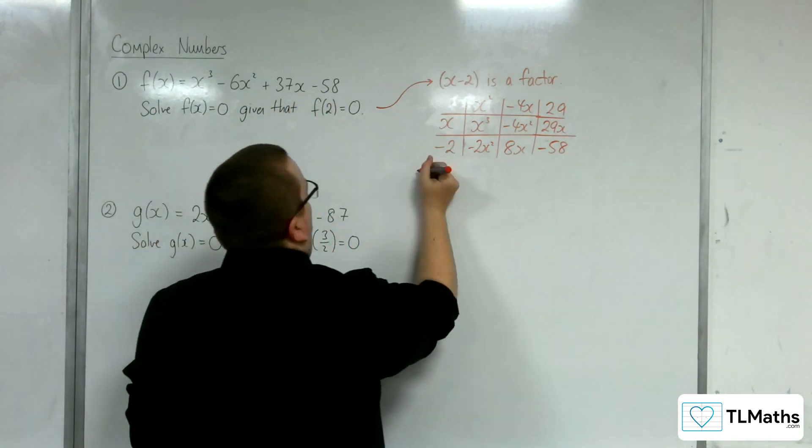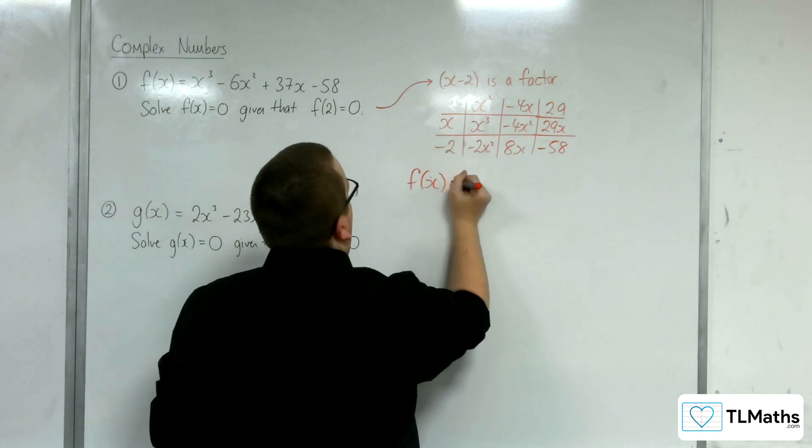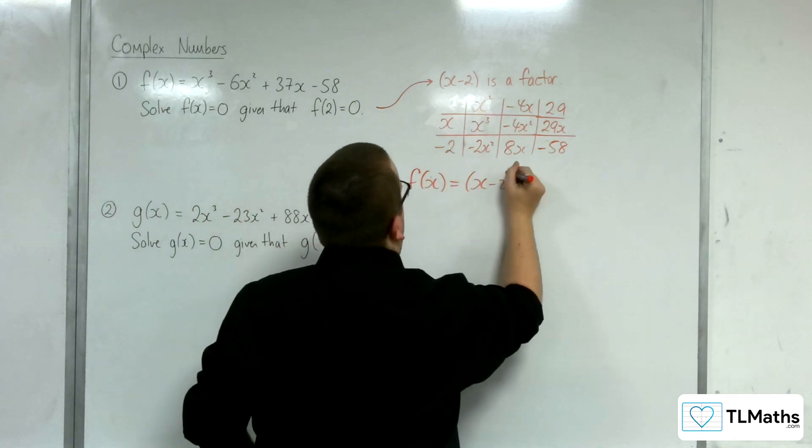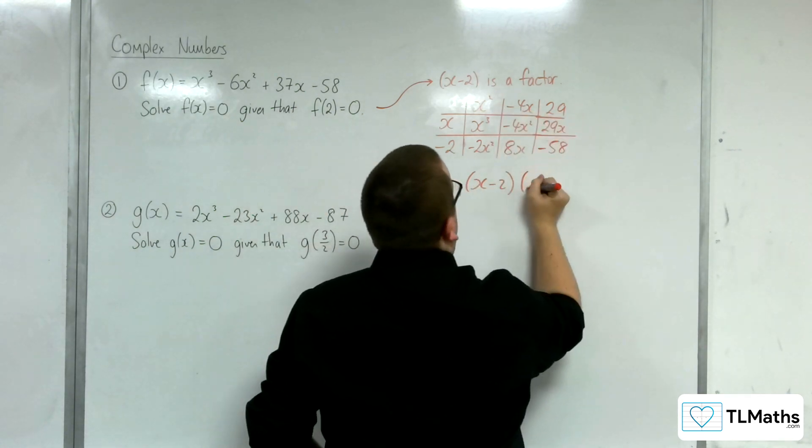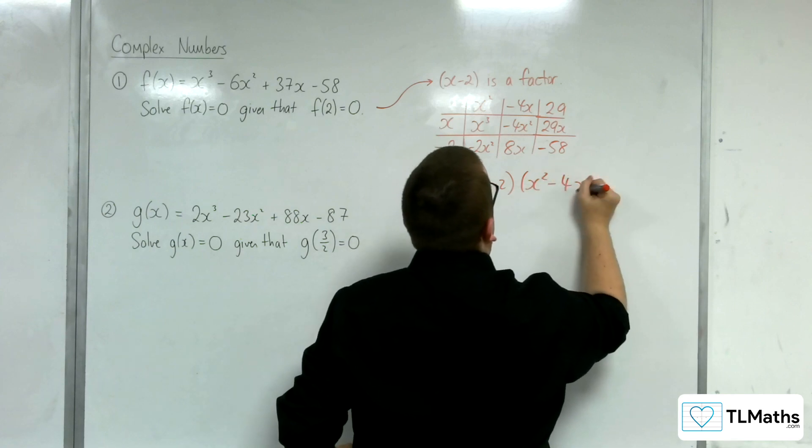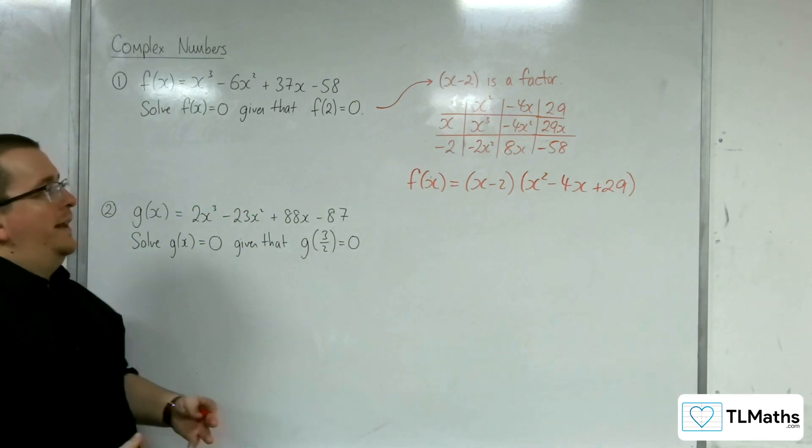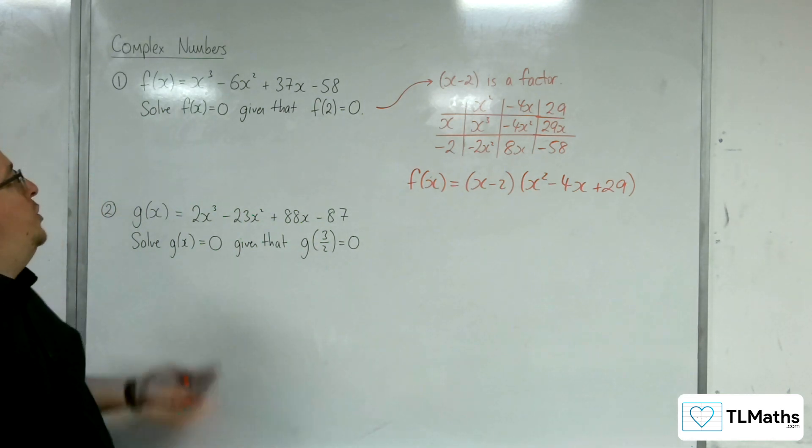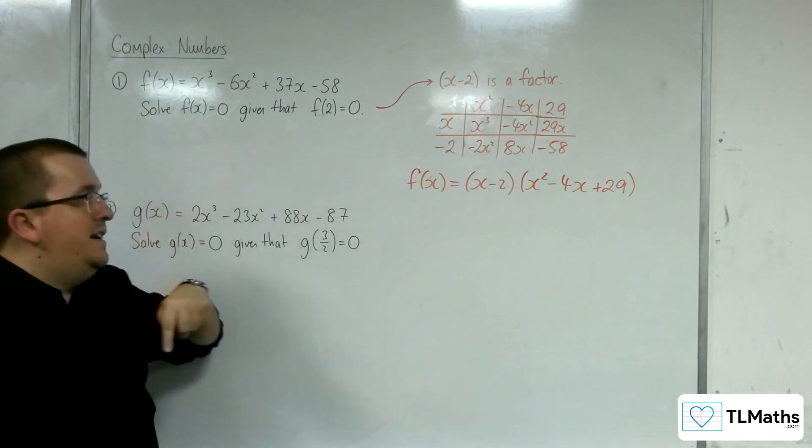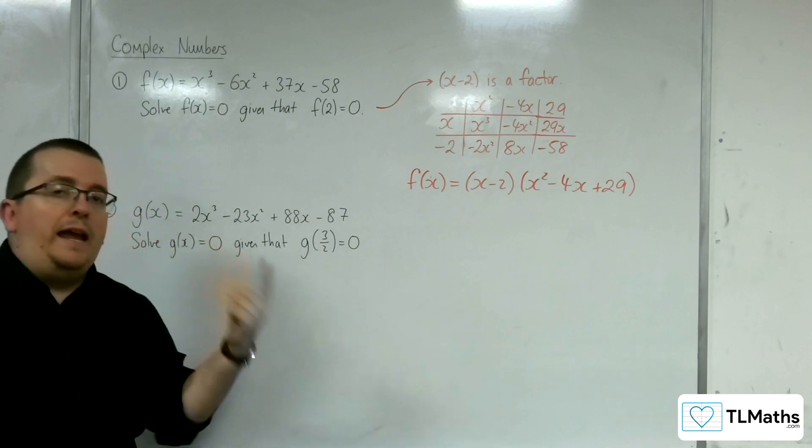So that means that I can write f(x) as (x - 2) times (x² - 4x + 29). So, currently, I know one solution of f(x) = 0. I know that x = 2 is a solution.